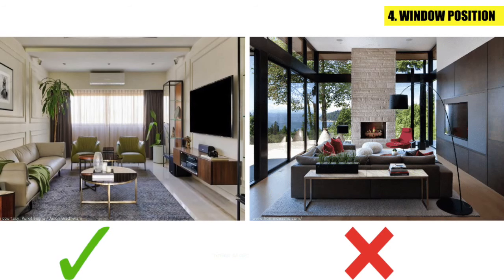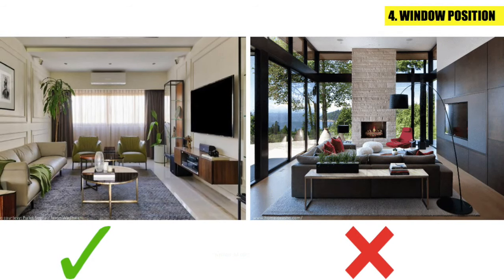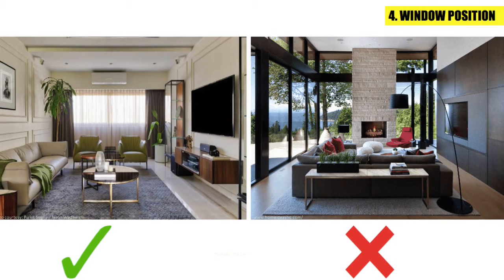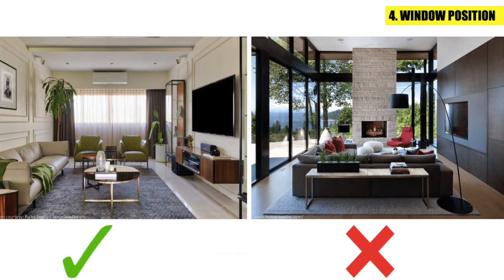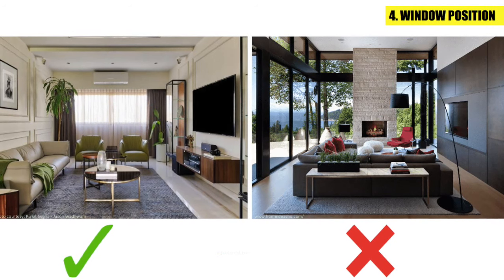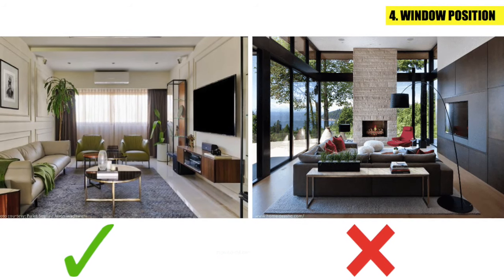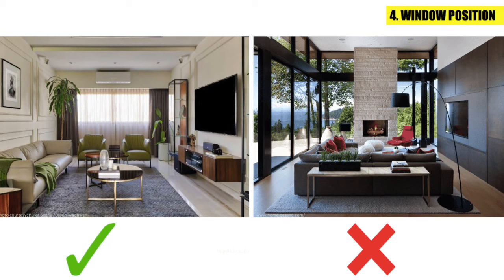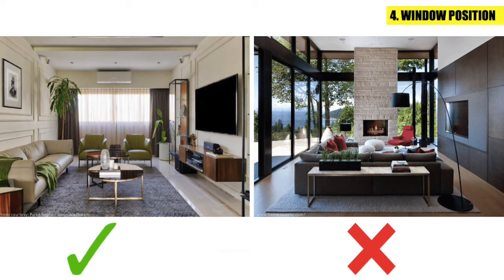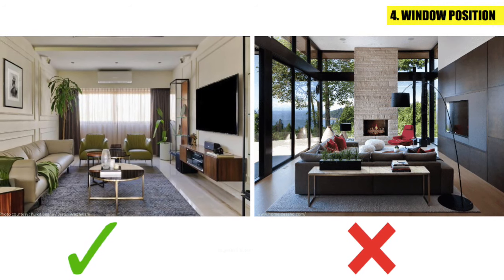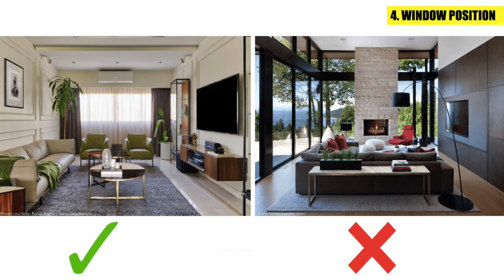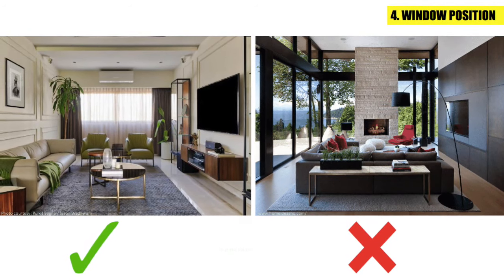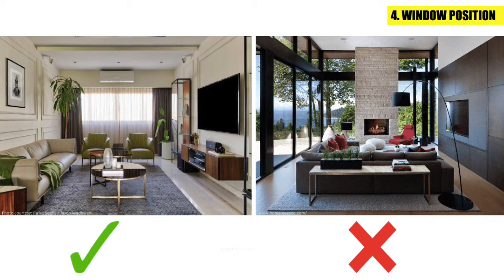Window Position: The best place for a TV is a blank wall. Don't install the TV in front of a window or close to a window, as it is harmful to your eyesight and prevents you from clearly seeing the image.